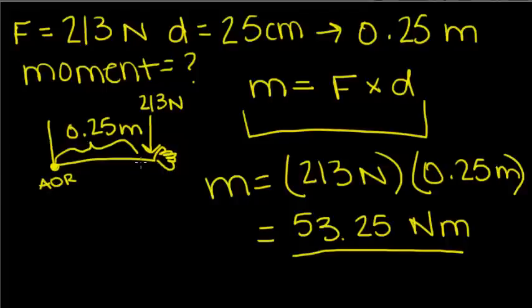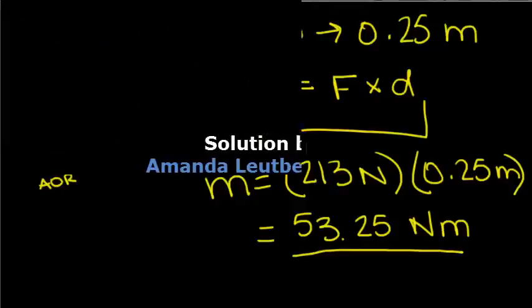Pay attention to the distance needed for the specific equation. In the same situation, the moment would be different if the fulcrum or axis of rotation was changed. So if the distance is changed and you're given two distances in the sample, make sure you pay attention to which distance you need to multiply the force by. It's always the distance in relation to the axis of rotation.